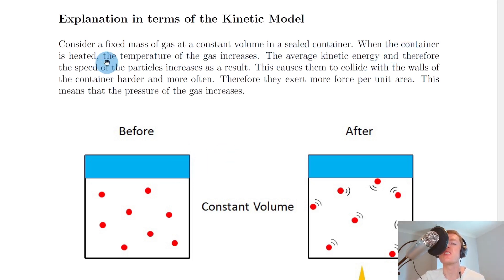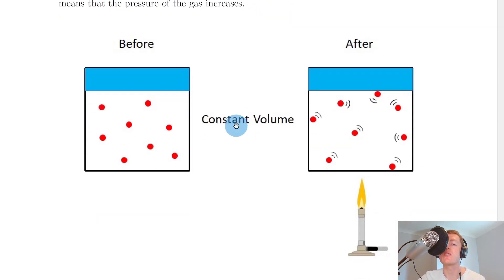It then says when the container is heated, the temperature of the gas increases. The average kinetic energy and therefore the speed of the particles increases as a result. So if we look at the picture, you can see that we're keeping the volume constant, but as we heat up the box here,